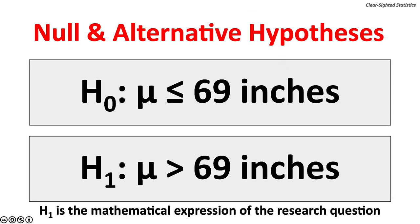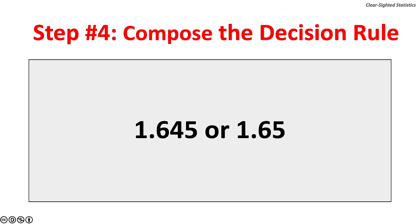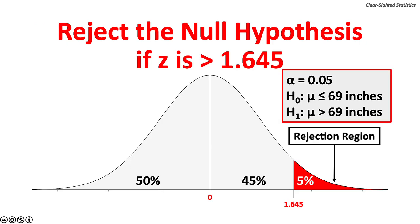The null and alternate hypotheses: Null hypothesis — mu is less than or equal to 69 inches. Alternate hypothesis — mu is greater than 69 inches. The alternate hypothesis is the mathematical expression of the research question. Step 4: Compose the decision rule. To do this, you must know the critical value for a right-tailed test when the significance level equals 0.05. The critical value is 1.645. Decision rule: reject the null hypothesis if Z is greater than 1.645.